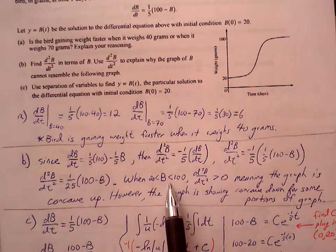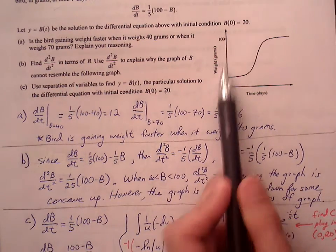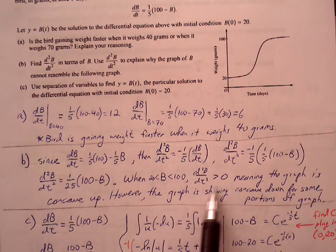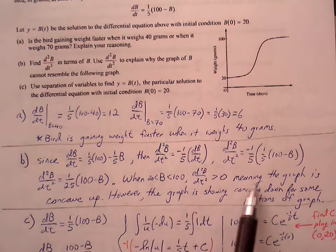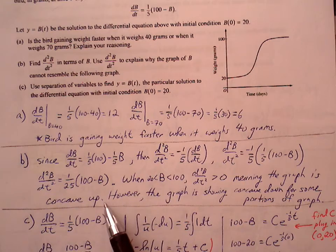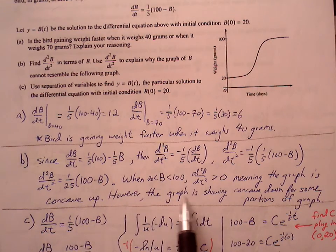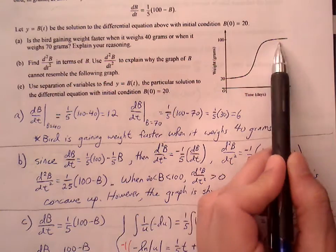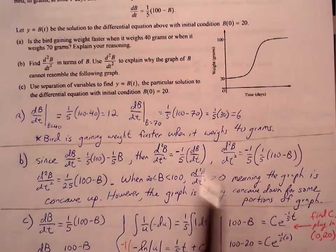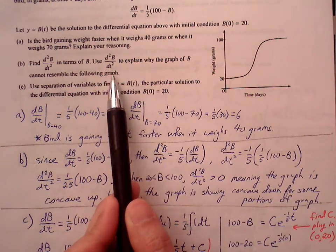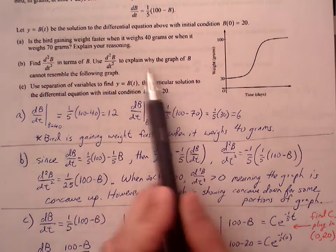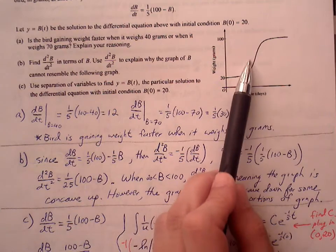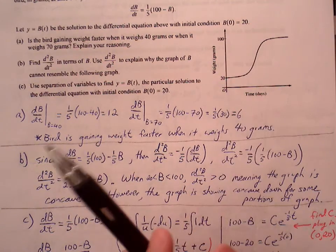Because B is between 20 and 100, the weight is between 20 and 100, our second derivative function is always going to be positive, which means that the graph is concave up. However, the graph is showing portions that are concave down, so we know that this graph cannot resemble or this second derivative means this graph is not going to resemble the actual B function.